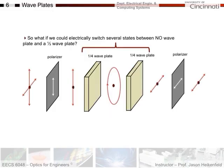The key question is: what if we could make an electrically switchable half wave plate? If we could electrically switch between a half wave plate and no wave plate at all, we could make a light valve that either transmits or blocks light. That is exactly how a liquid crystal display works.